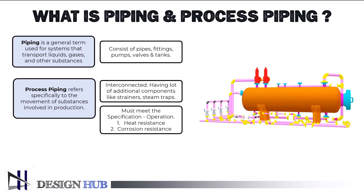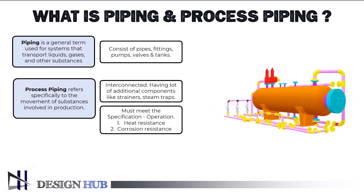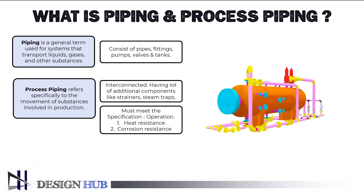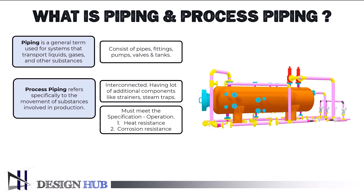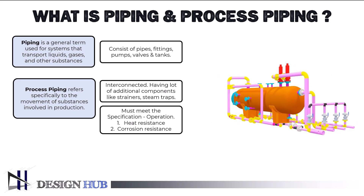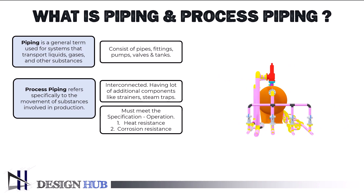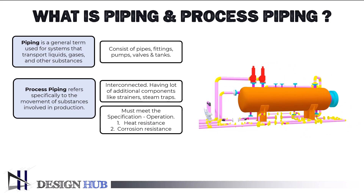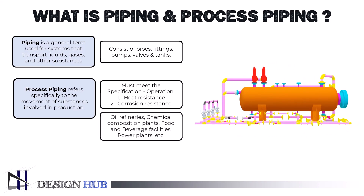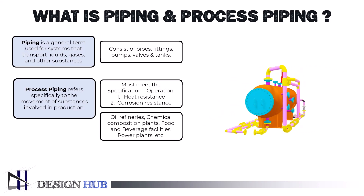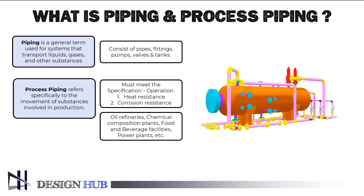A facility's fluids, gases, and other materials are moved about via a system of pipes, valves, and other parts known as process piping. It is utilized in numerous industries and is an essential component of many industrial and manufacturing processes.